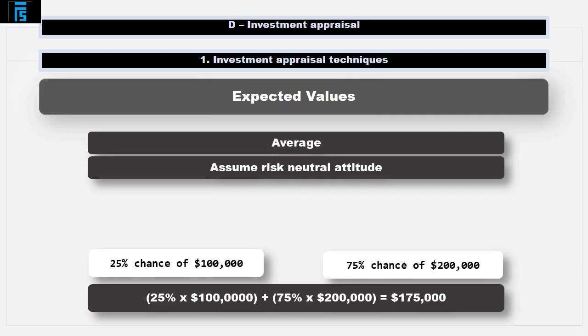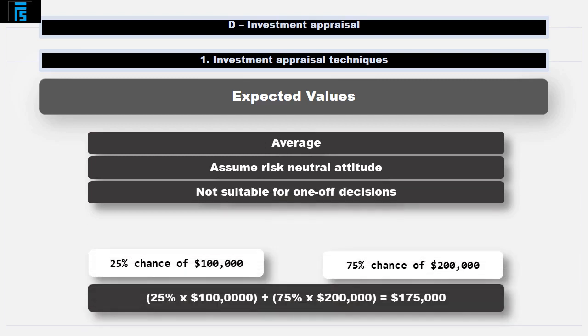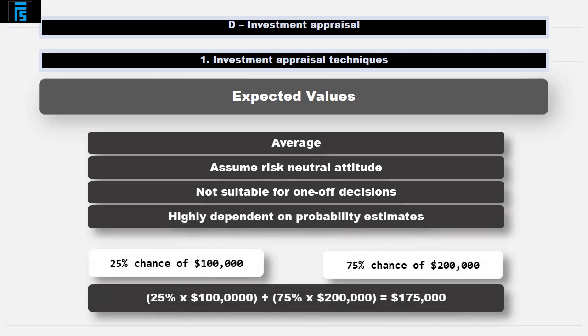A little extreme perhaps, but imagine if the company will fail completely if sales were as low as $100,000. The decision maker, when using expected values, would therefore not be considering that there was a 25% chance of the company failing. Expected values are therefore a long run average and are not suitable for one-off decisions. They are also highly dependent on the estimate of probabilities.